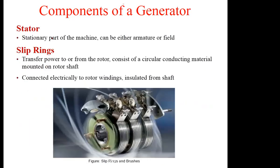Then we also have the stator, which is the core — this is the stationary part, which can be either the armature or the field. The field is the one which produces the required magnetic field in the machine. The armature is the one which carries the generated EMF. So you should take note of that distinction.